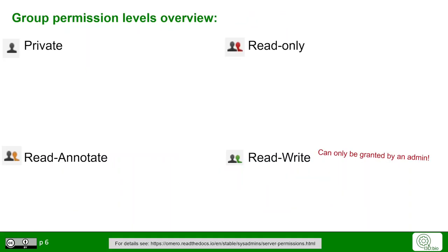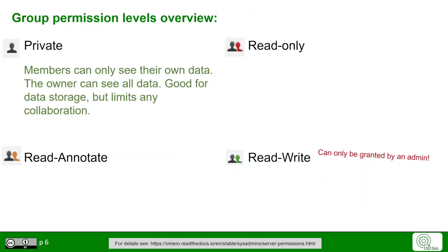Let's understand what the different permission levels mean. In the private permission level, members can only see their own data. The owner can see all data. This is good for data storage, but it is very limiting in terms of collaborating on data.